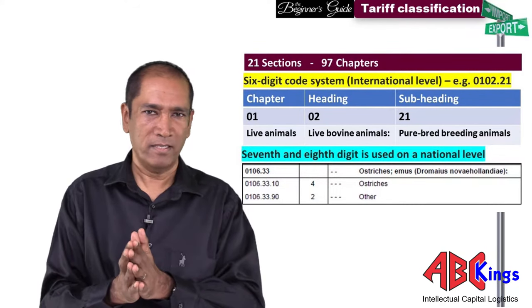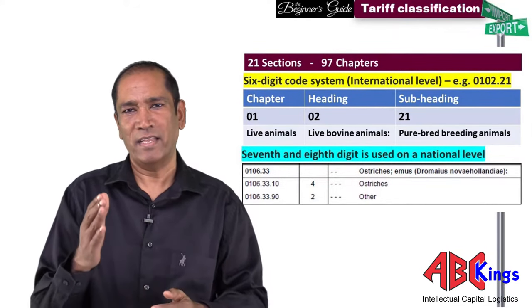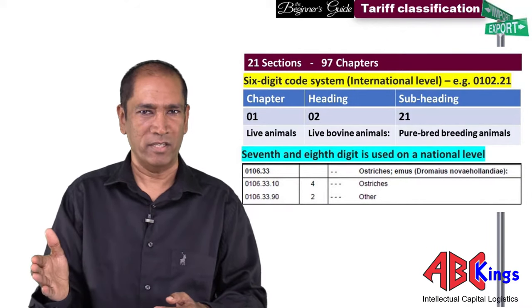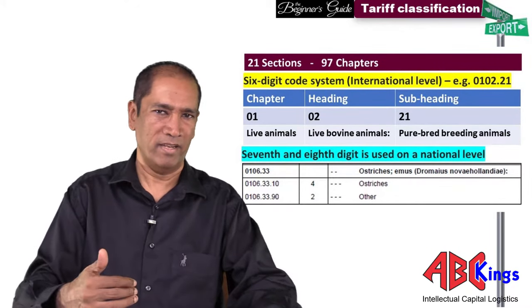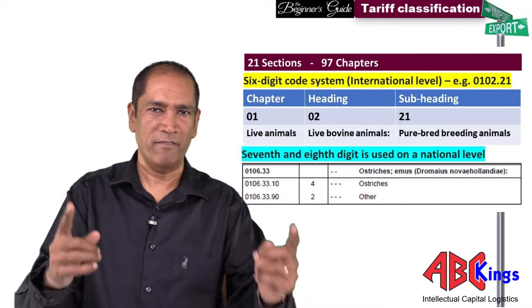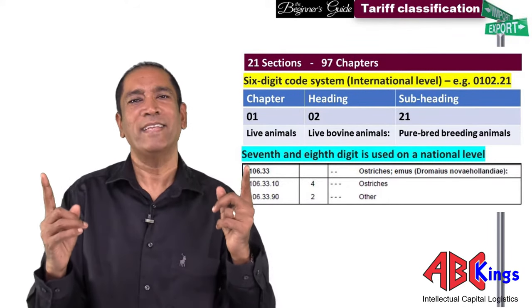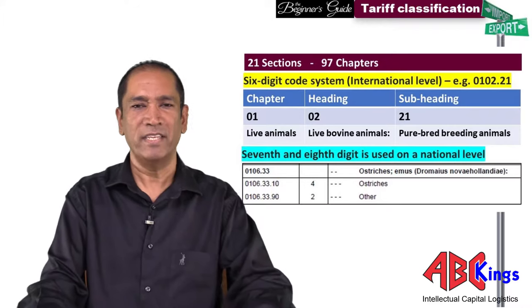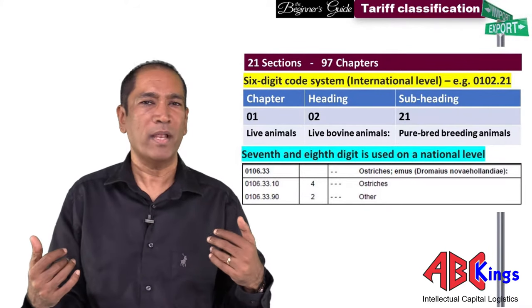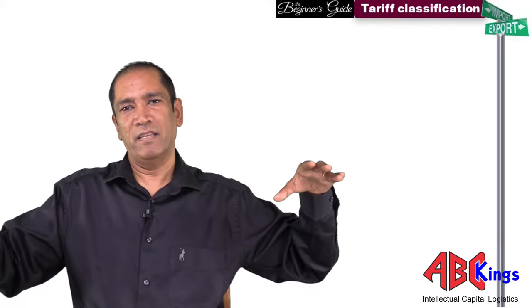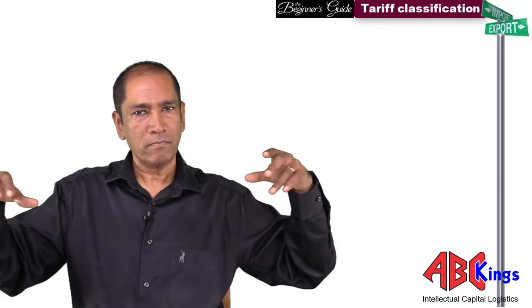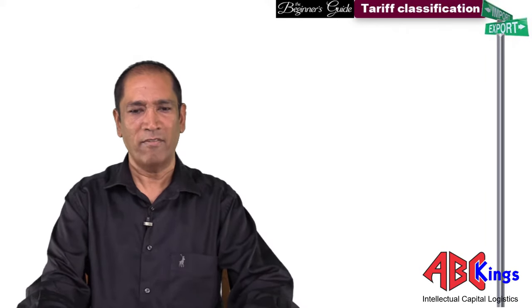In some instances you'll find that the tariff heading has a seventh and eighth digit. The seventh and eighth digits are always on a national level — they are country specific. The first six digits are international and used internationally. I want to give you an aerial view of the 97 chapters in the system so that you'll have a basic understanding of how it works.